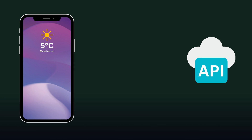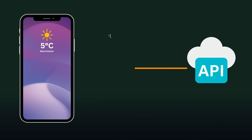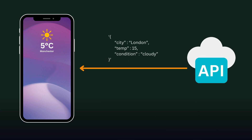Let's see how JSON is used in an API request. Using our weather app example, let's make a GET request for the weather in London. The API will respond with a JSON string in this format — we have the city London, the temperature 15 degrees, and the condition cloudy.